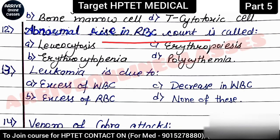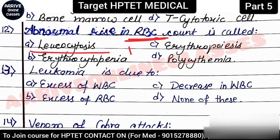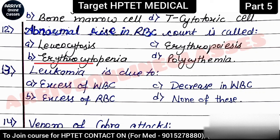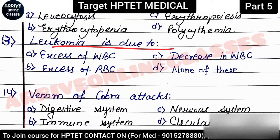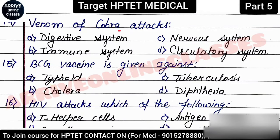Next question: 'Abnormal rise in RBC count is called?' If the RBC production process in bone marrow increases abnormally, a type of blood cancer occurs called polycythemia. If the question mentioned WBC instead of RBC, the answer would be leukocytosis. Erythropoiesis means the formation of RBCs. Erythrocytopenia means when RBC count decreases. Leukemia is also a blood cancer — it is the condition when WBC count increases.